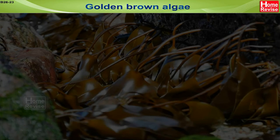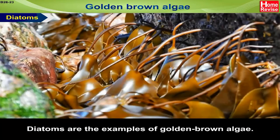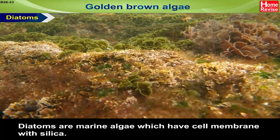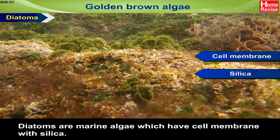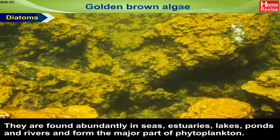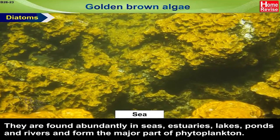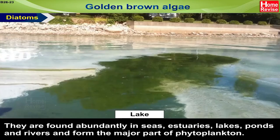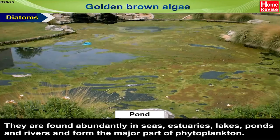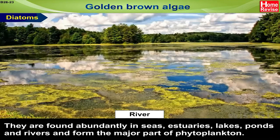Golden Brown Algae. Diatoms are examples of golden brown algae. Diatoms are marine algae which have a cell membrane with silica. They are found abundantly in seas, estuaries, lakes, ponds and rivers and form the major part of phytoplankton.